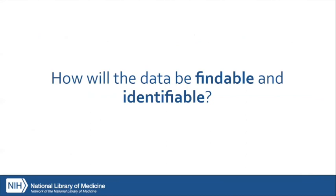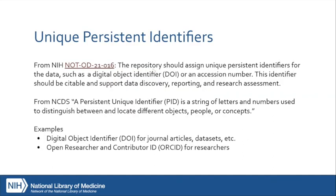That covers choosing repositories, which is the most important part of Element Four. We also need to talk about how data will be findable and identifiable. Any data or information is findable through metadata, and specifically for shared data, through the use of unique persistent identifiers or PIDs. These terms can be used almost interchangeably. Unique persistent identifiers are also one of the desirable characteristics for choosing a repository.